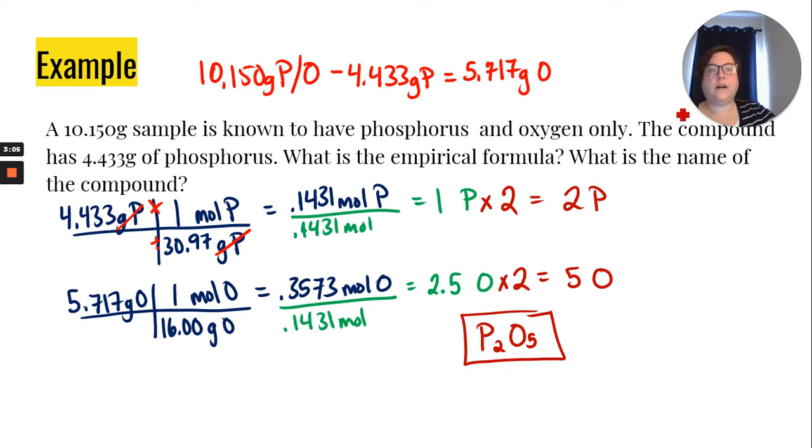This question is also asking us to name it, since we're practicing nomenclature here. Phosphorus and oxygen are both nonmetals. They're found to the right of the stairs. So we need to use our prefixes. Phosphorus has a subscript of 2. So we would say diphosphorus. 5 is penta. So we would say pentoxide. We drop the A just because it sounds better.